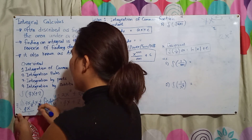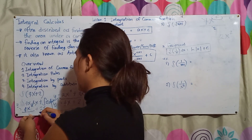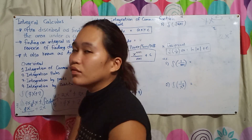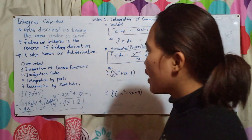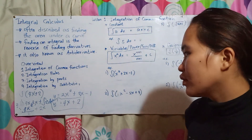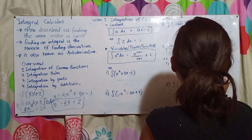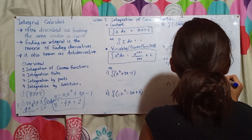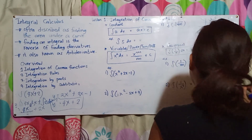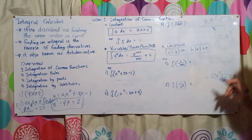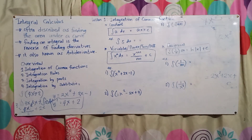So 4x²/2 + 2x simplifies to 2x² + 2x. And in integration, you always add plus C (the constant of integration) at the end. So the final answer is 2x² + 2x + C, which matches our original function.